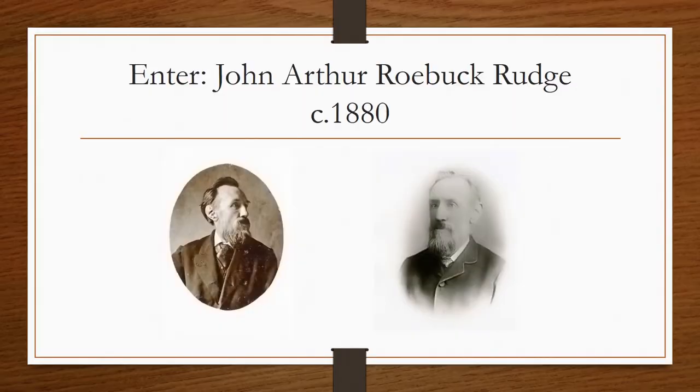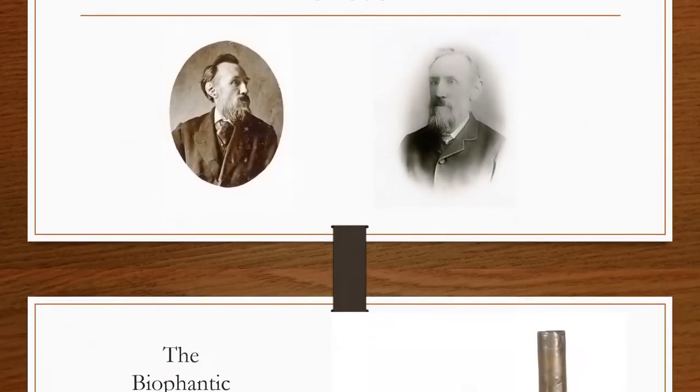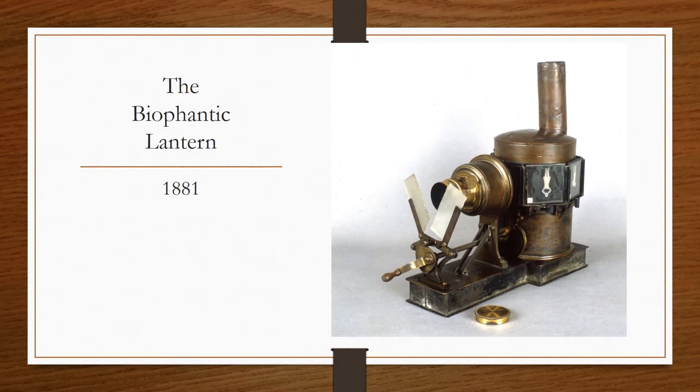And I think Friese-Greene would have, a slightly older man, would have seen something in him as a bit of a mentor. And above all he fired Friese-Greene's imagination because Friese-Greene was a photographer and here was Rudge wanting to do something with photography to create motion with magic lantern rather than just using drawn pictures or just individual pictures. He wanted to try and create a sequence and he made this thing called the biophantic lantern.